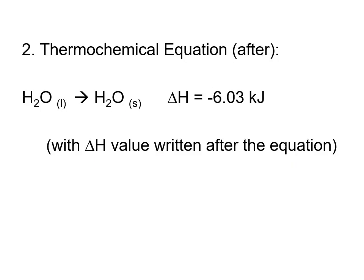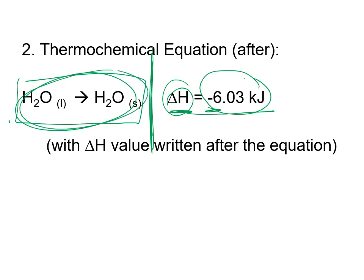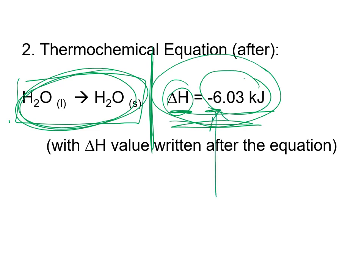You could also have the equation written out and then state what the enthalpy change would be afterwards. In this case, depending on whether it's endo- or exothermic, you can write it accordingly. Because you can have exothermic reactions, you would see the energy term written as a negative, because it is not part of the reaction itself — it's additional information saying here's the process, and by the way, here's the energy change involved. This is probably the more common and neater way of seeing a thermochemical equation, with the energy term written afterwards.